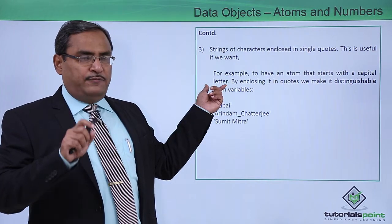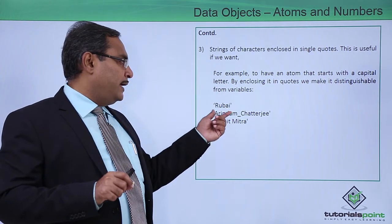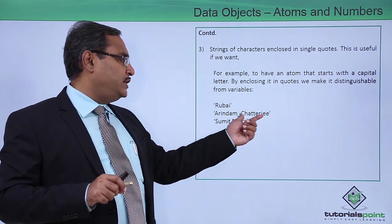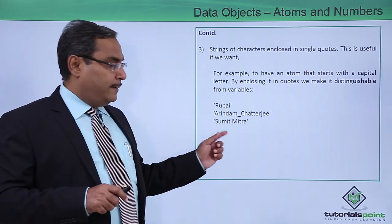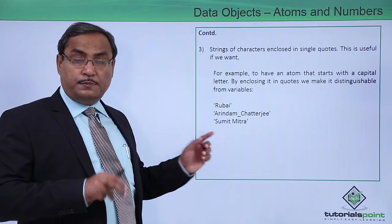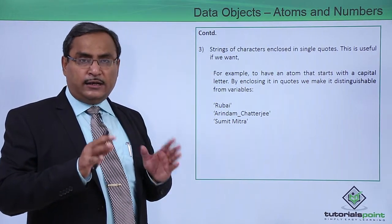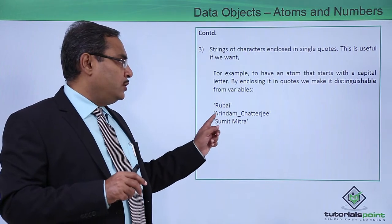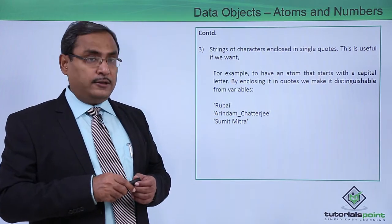In those cases, if I want to make one atom with the first letter capital, like Rubai, Arindam Charajji, Sumit Mitra—if you write them with first letters as capitals but I do not want to mention them as a variable but as atoms, then they must be enclosed within single quotes. That is a nice way to represent atoms here.